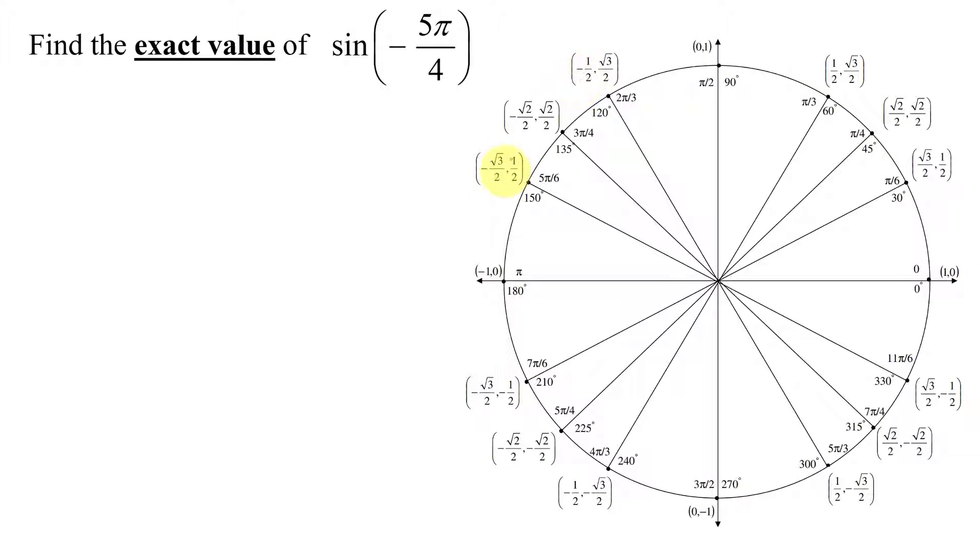I need to use the unit circle shown over here. But looking at the angle of negative 5π over 4, is that angle anywhere on my unit circle? No, all the angles on the unit circle are positive and I have a negative angle.